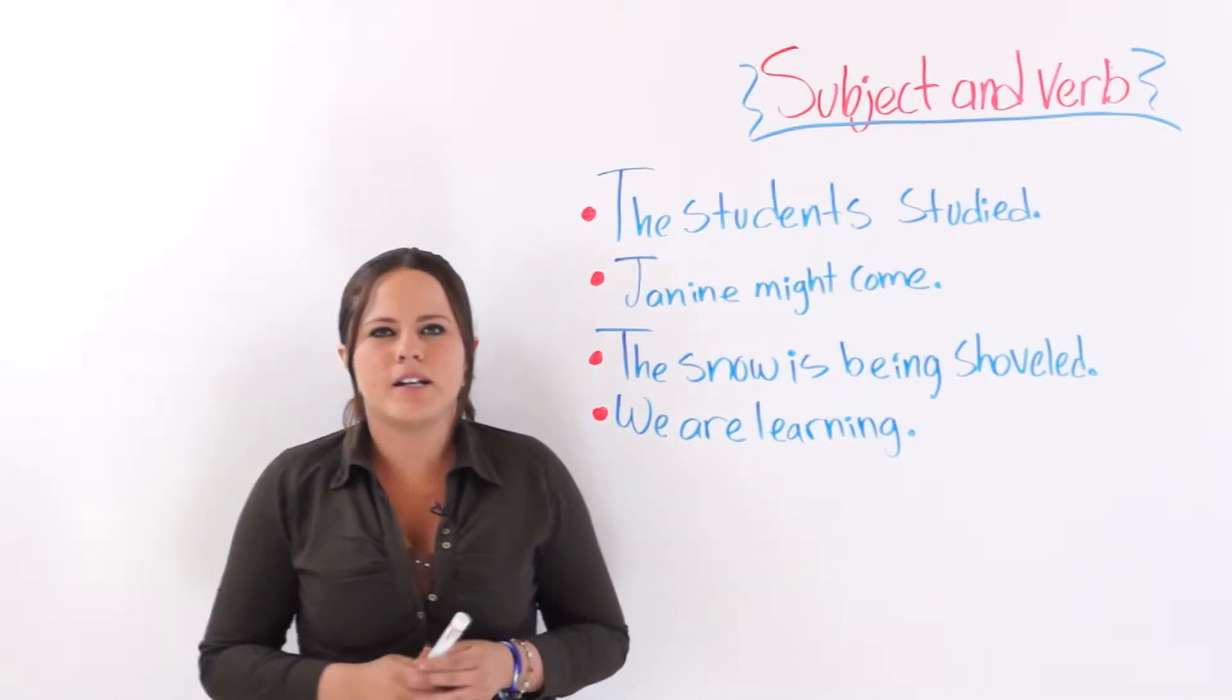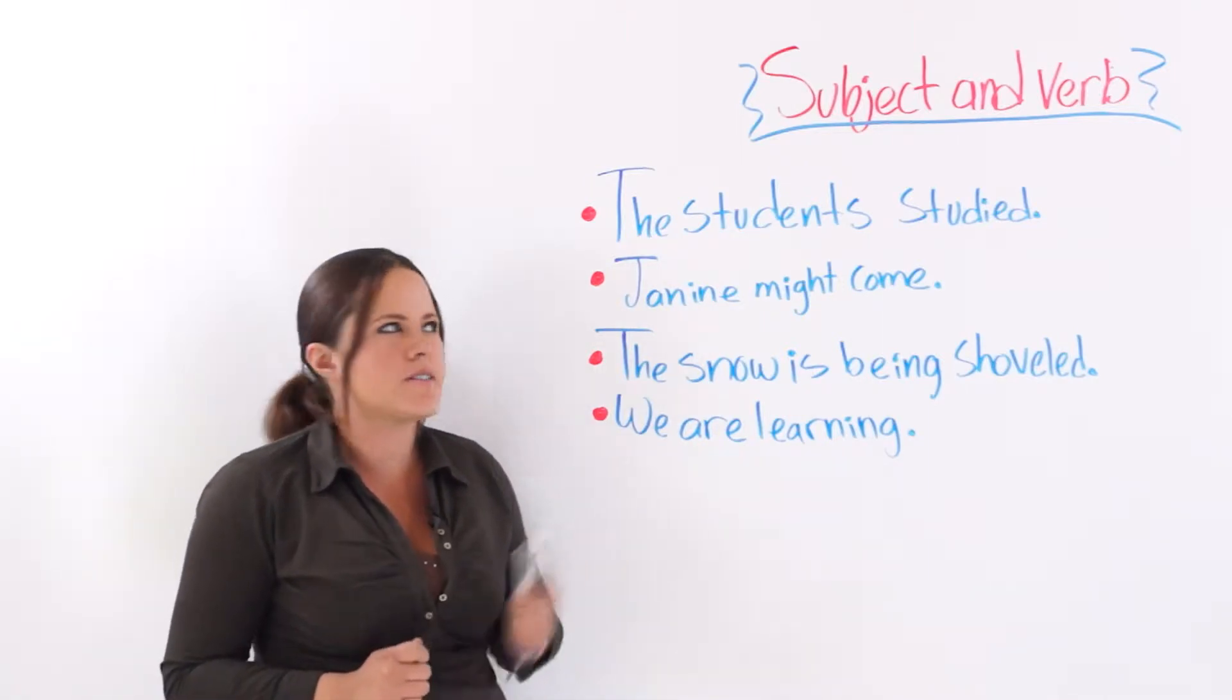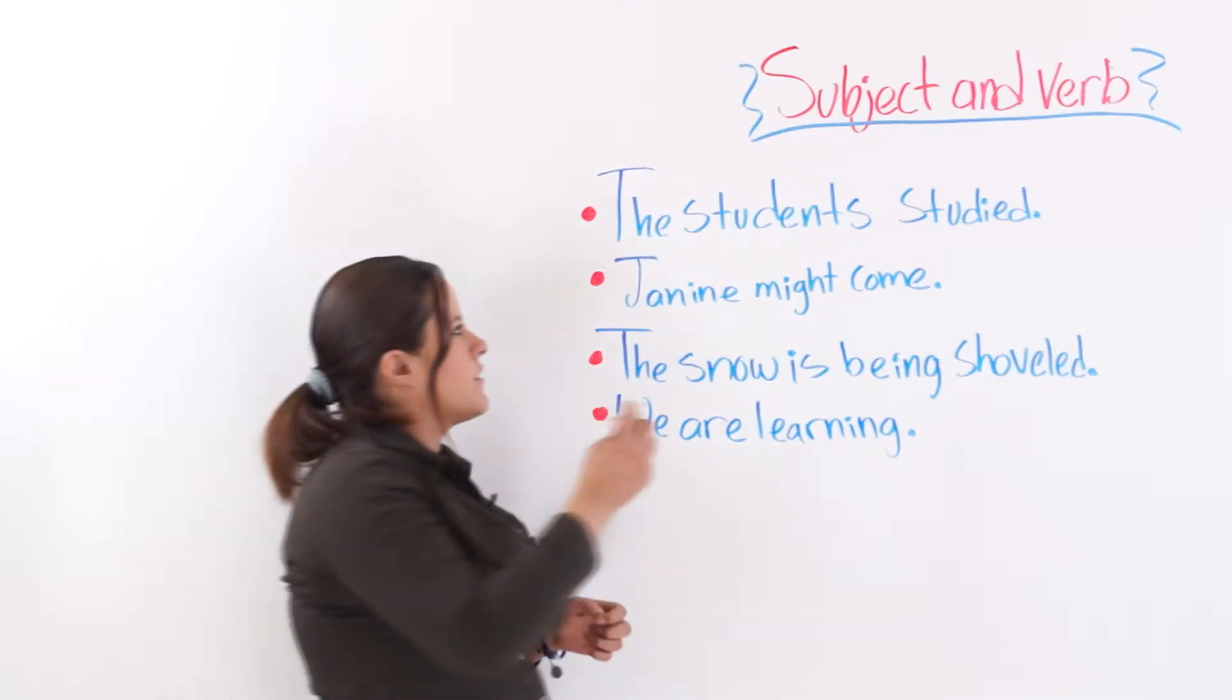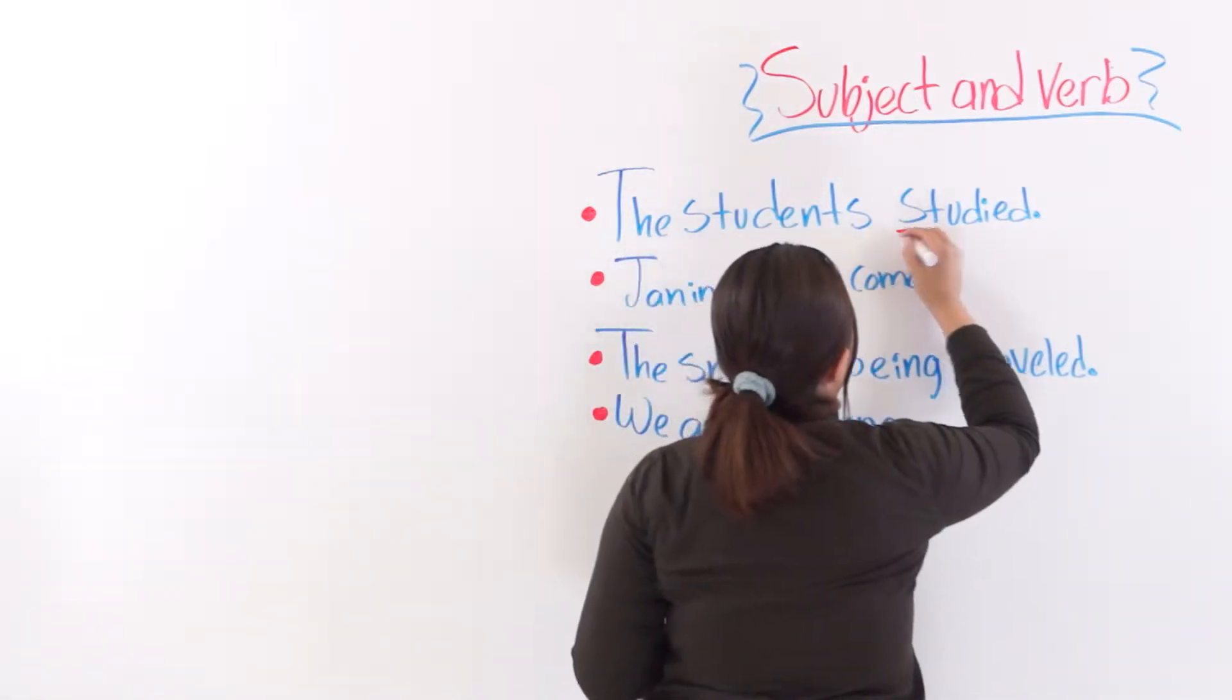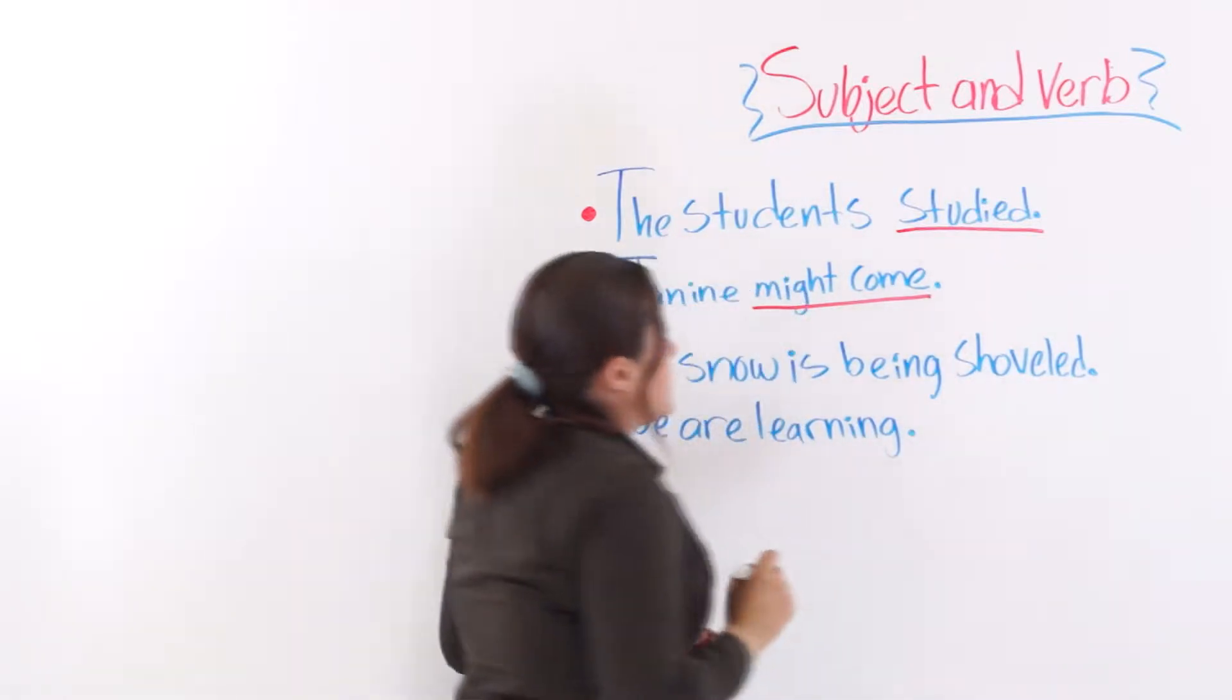As you may already know, a sentence consists of two parts, a subject and a predicate. And the verb here, the verbs here are simple predicates.